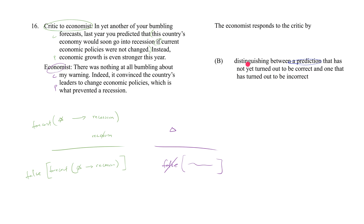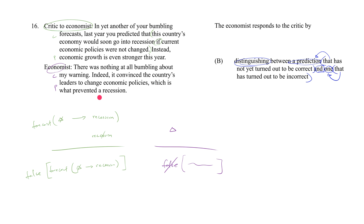B is saying the economist responds by distinguishing between two types of predictions: X — a prediction that has not yet turned out to be correct (we're still waiting to see) — and Y — a prediction that has turned out to be wrong. The economist would be saying: critic, don't conflate these two; distinguish between them. But that's not what the economist says at all. The economist doesn't make that distinction here.